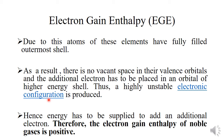So in that case, we have to supply some amount of energy to add an additional electron. As energy is supplied, the process is endothermic. Therefore, the electron gain enthalpy of noble gases is positive.